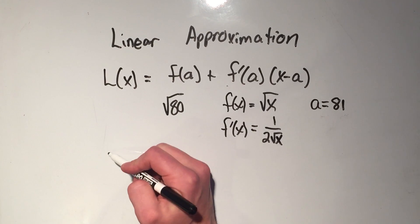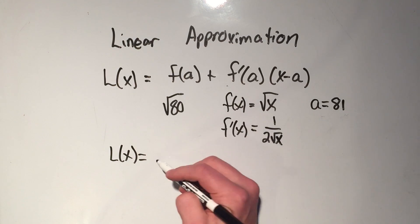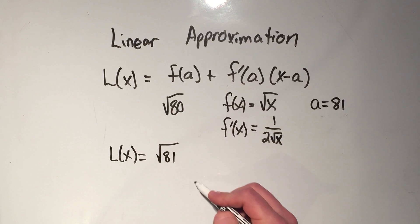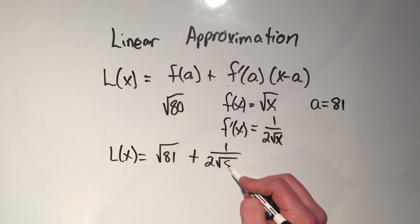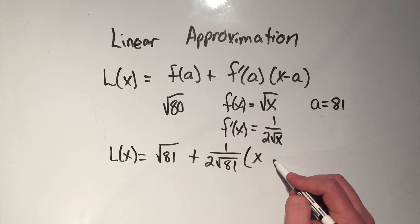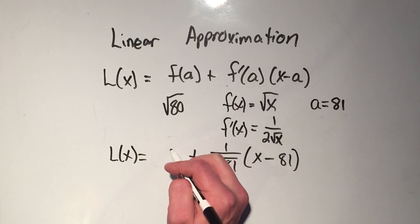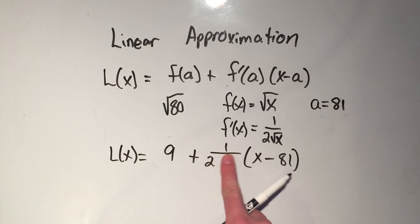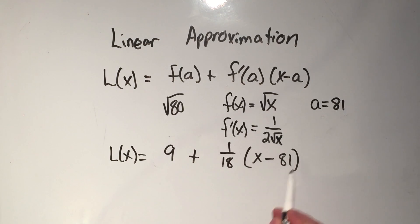Okay, and now I can start filling this thing in. So my linearization, my linear approximation, is f of a, that's square root of a, square root of 81, plus f prime, which is 1 over 2 square root of a, plug a into there, times x minus a. Okay, there's my linearization function, and I can clean this up. We know what the square root of 81 is. That's 9. So this would be 1 over 2 times 9, or 1 over 18. Now so for values close to 81, this closely approximates it.